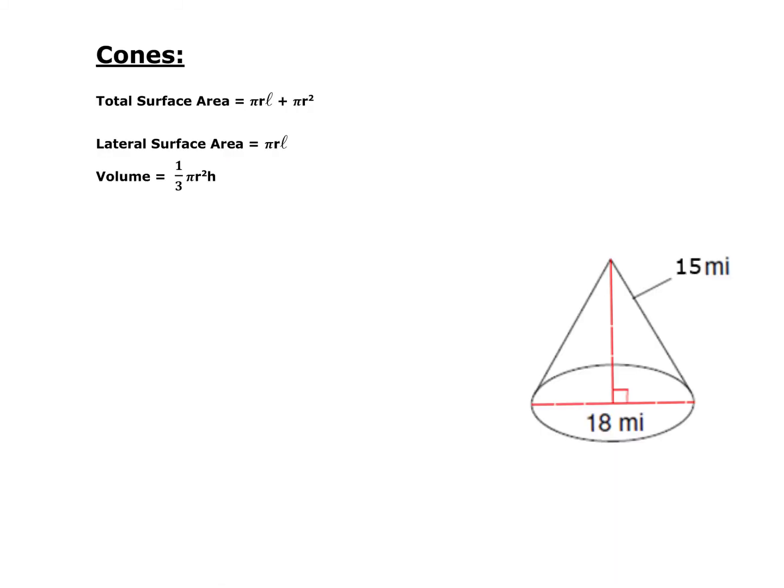Now let's look at the cone. We know our total surface area and our lateral surface area. Now we're going to look at the volume, and its formula is the same as that of a cylinder only it's a third of the cylinder.